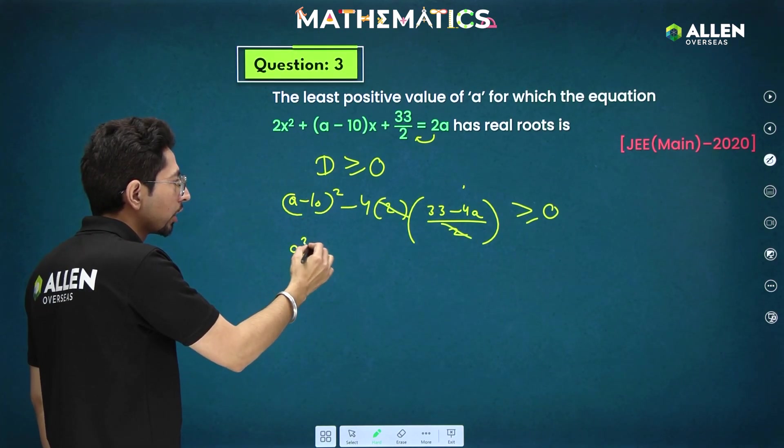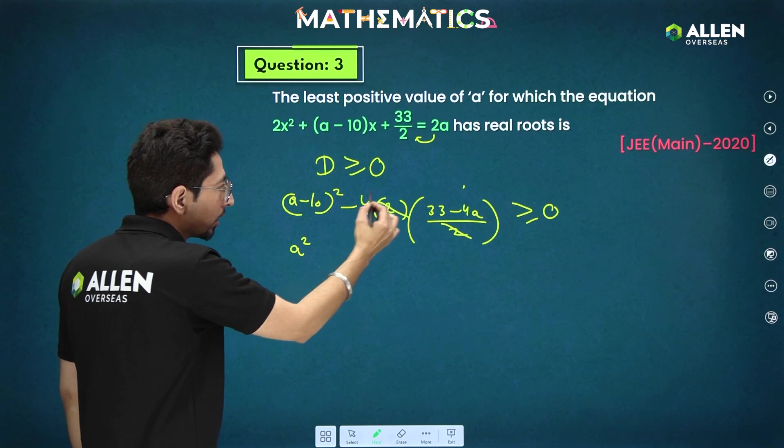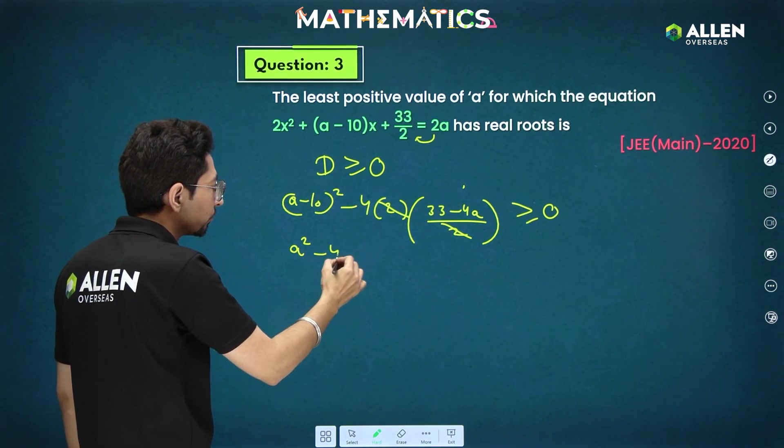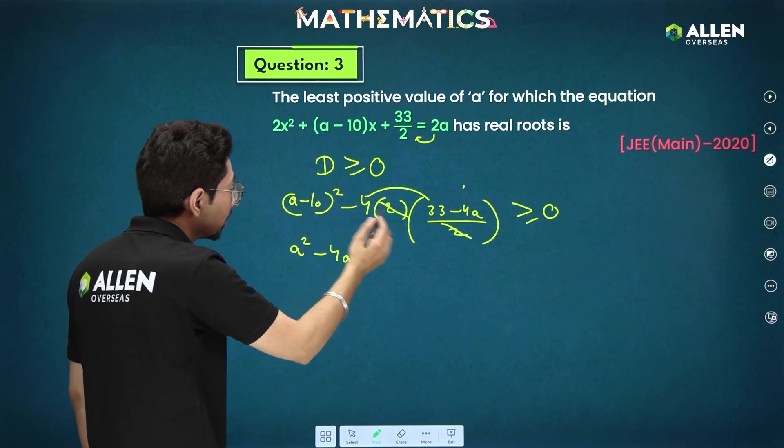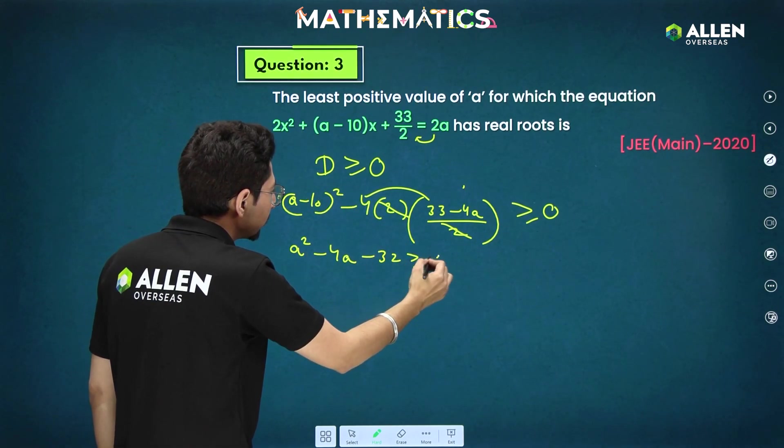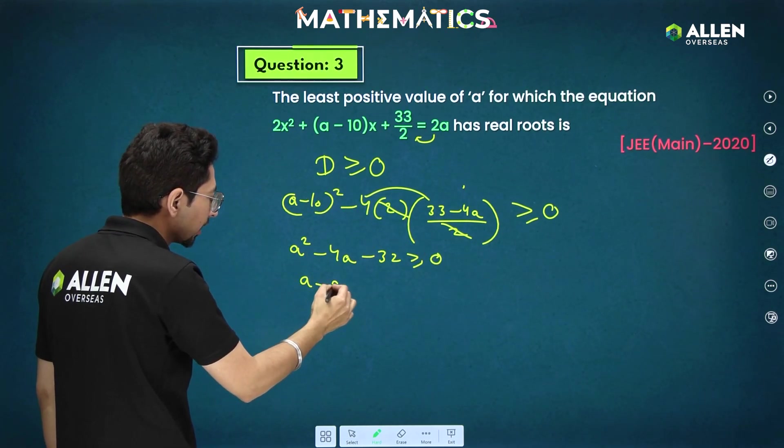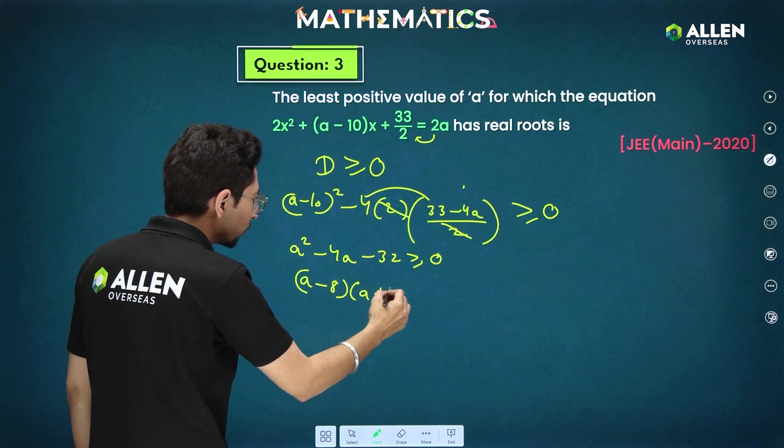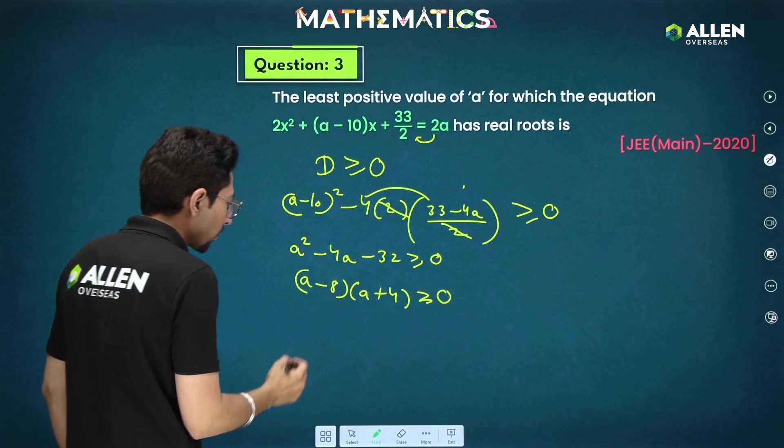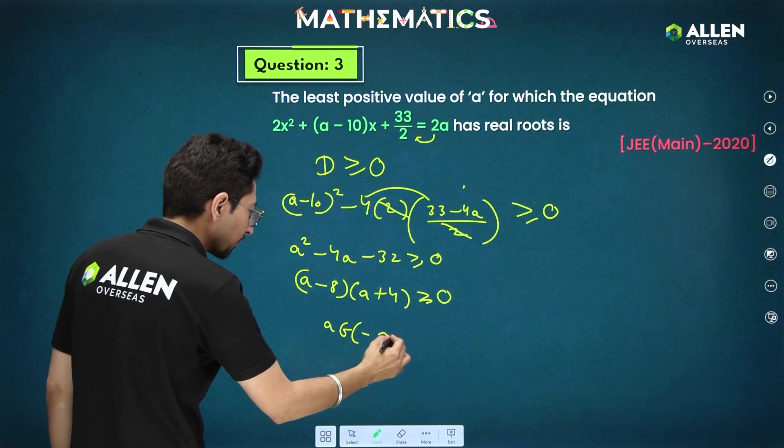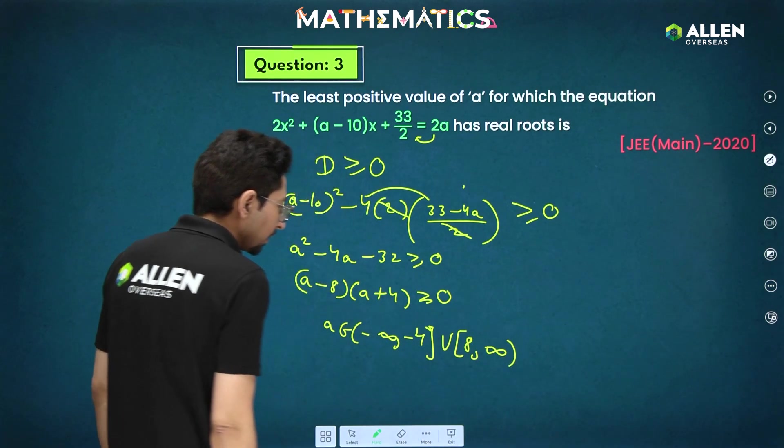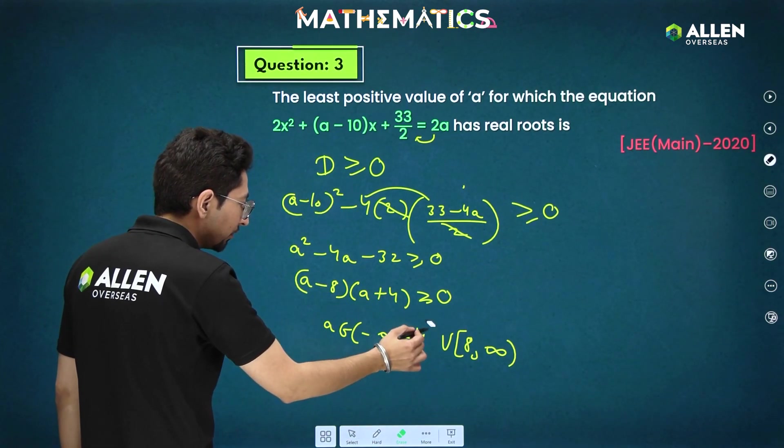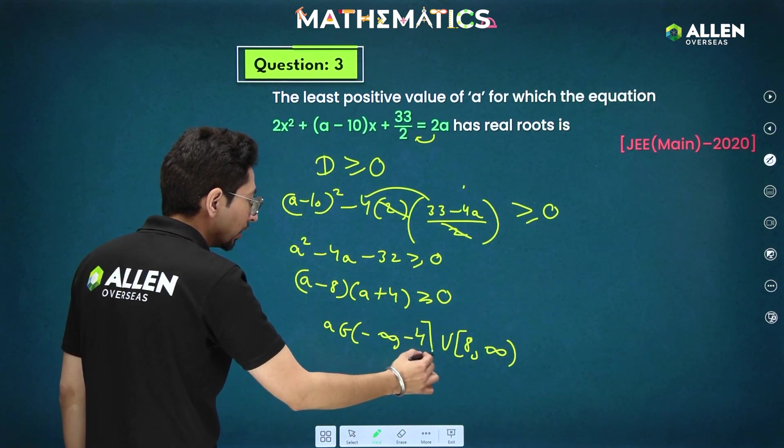On squaring this up, we are getting A² - 20A + 16A. That will be -4A + 100 - 132. 100 - 132 = -32 ≥ 0. This will be factorized as (A - 8)(A + 4) ≥ 0. From here, what we are getting? A ∈ (-∞, -4] ∪ [8, ∞). Now, in this, what we have been asked? We have been asked that positive value, least positive value...